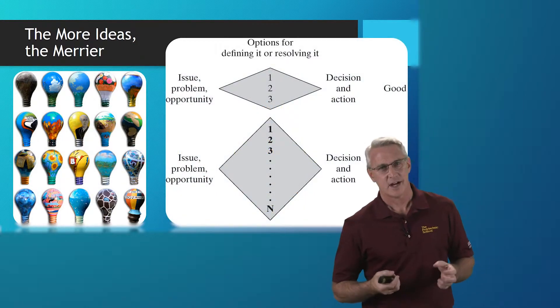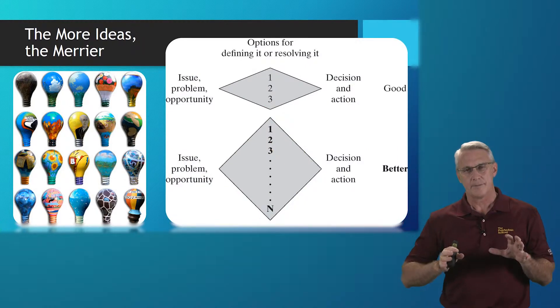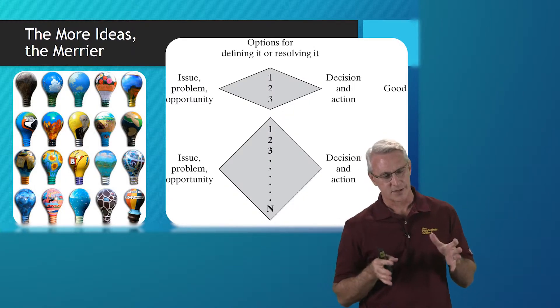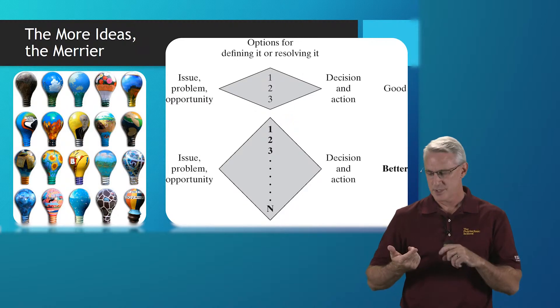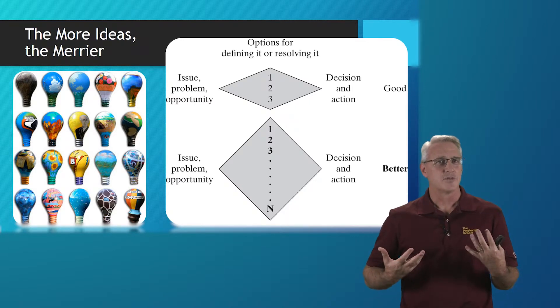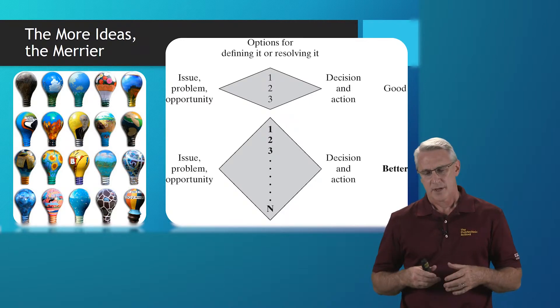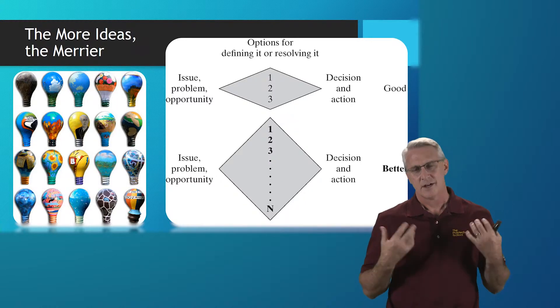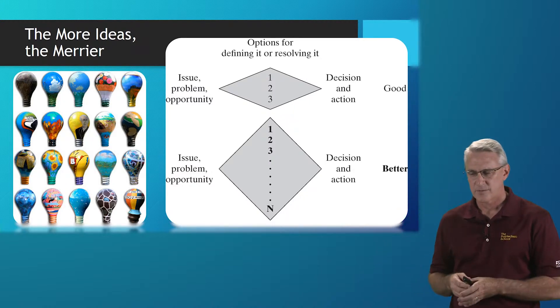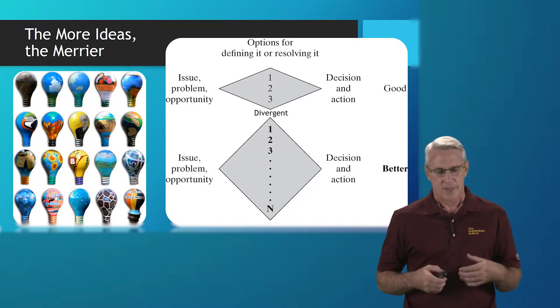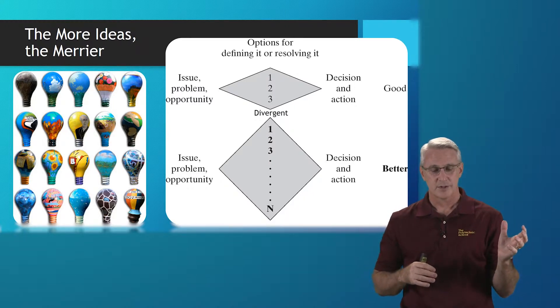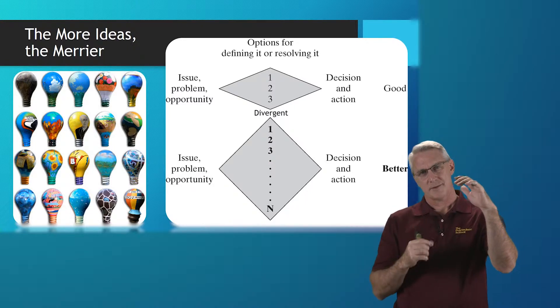Think of it as a divergent convergent situation, that's what these diamonds are in the middle. We're taking some kind of issue, problem or opportunity, or IPO as we usually call those, and we want to get a solution. On the left side, we start with the problem identification or opportunity identification. In the middle, we're looking for divergent thinking.